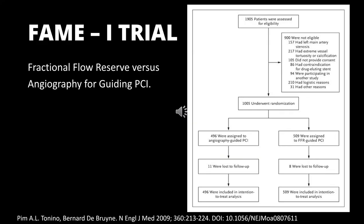In the FAME-1 trial, approximately 1000 patients with multivessel CAD with intermediate stenosis of at least 50% were randomized to either angiographic-guided PCI or FFR-guided PCI. In the angiographic-guided PCI group, PCI was done for all lesions with stenosis more than 50%. In the FFR-guided PCI group, FFR was done for all stenoses more than 50%. If FFR was less than or equal to 0.8, PCI was done; if FFR was more than 0.8, PCI was deferred and the patient was started on optimal medical therapy.